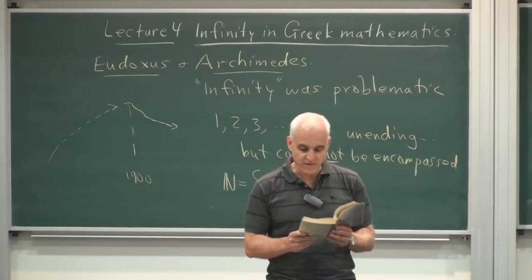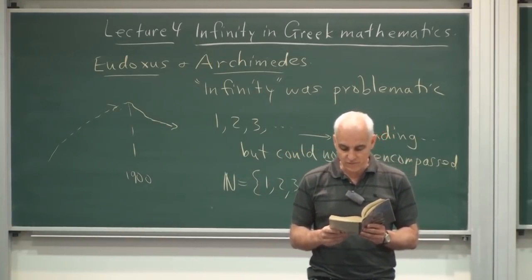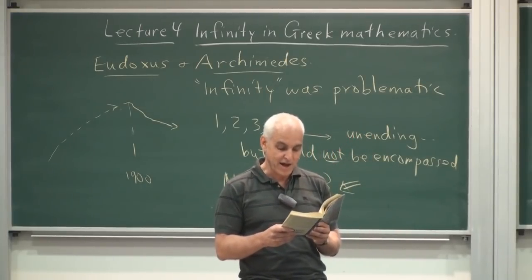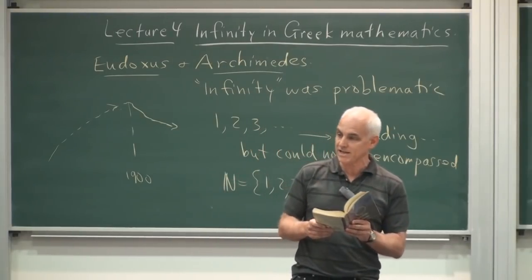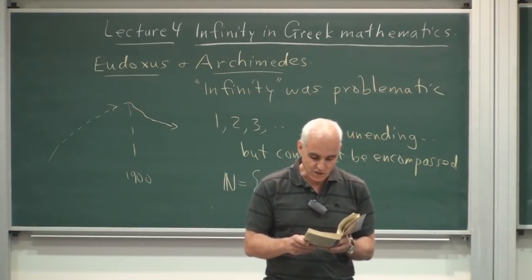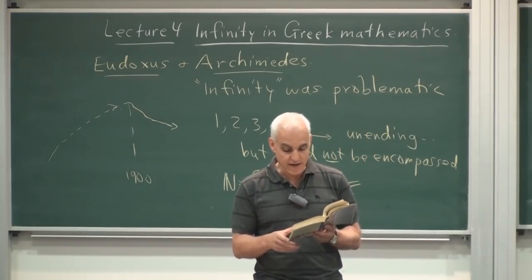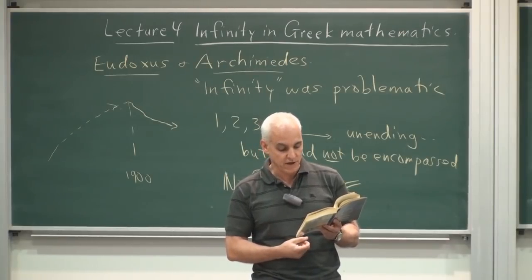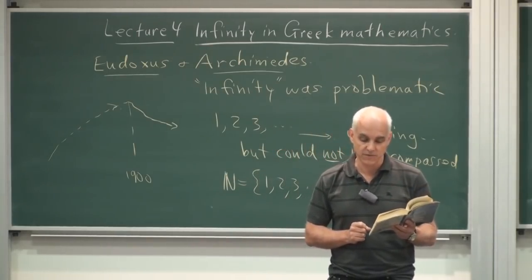They are these. First, that the surface of any sphere is four times its greatest circle. Next, that the surface of any segment of a sphere is equal to a circle whose radius is equal to the straight line drawn from the vertex of the segment to the circumference of the circle, which is the base of the segment. And further, that any cylinder having its base equal to the greatest circle of the sphere and height equal to the diameter of the sphere is itself half as large again as the sphere and its surface also, including its base, half as large again as the surface of the sphere.